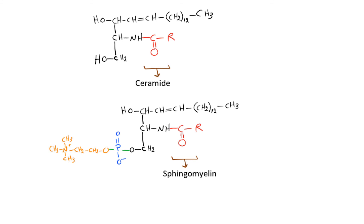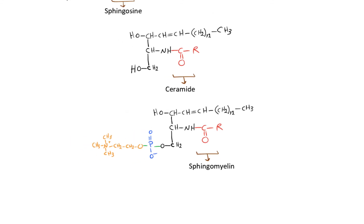For example, sphingomyelin has choline as its polar head group.